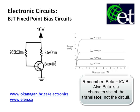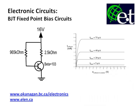We picked a point where the beta is 103. Fixed point bias circuits have only one power supply, which is an advantage over circuits requiring more than one supply. However, the disadvantage is that this circuit is highly dependent on the value of beta. If you've done testing with transistors, you'll know that beta can vary significantly from transistor to transistor, even within the same part number or the same batch.